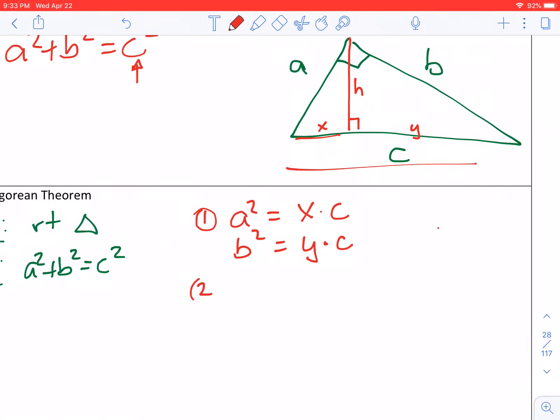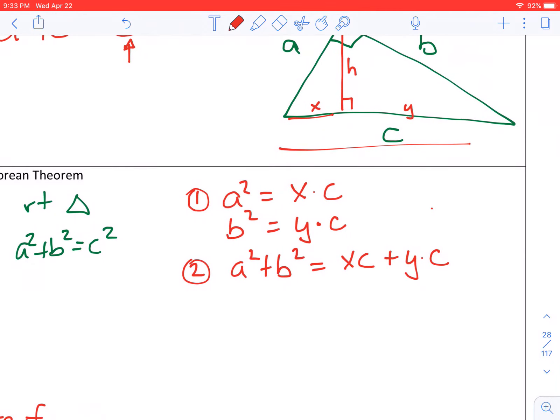All right. Number two. Well, if we add these up, we get A squared plus B squared. Well, that's convenient. Unfortunately, we have these two things on the right side, which does not look like C squared. But if we do a little fancy factoring and pull out a C from both of those, notice we're left with X plus Y.